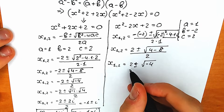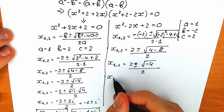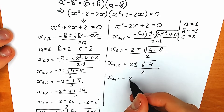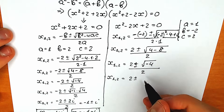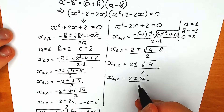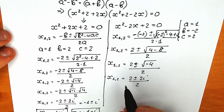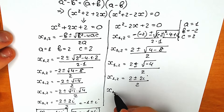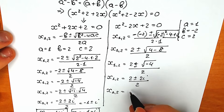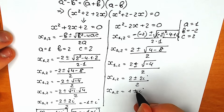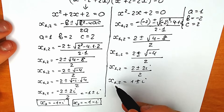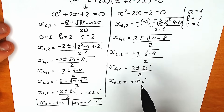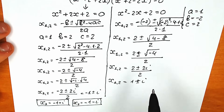Dividing the numerator by 2: x₃ equals 1 plus i, and x₄ equals 1 minus i. So we have 2 roots from the first equation and 2 roots from the second.